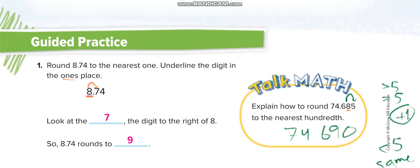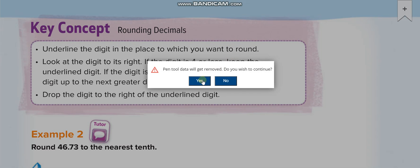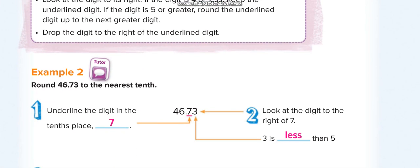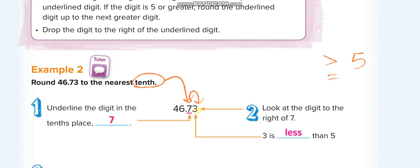On the next page I'll show you how to round numbers. For example, we are rounding 46.73 to the nearest tenth. The first thing you do is underline the place value — the tenths place, which is the 7. After underlining it, you don't check that digit; you check the next number, which is 3. You check whether it is greater than or equal to five.